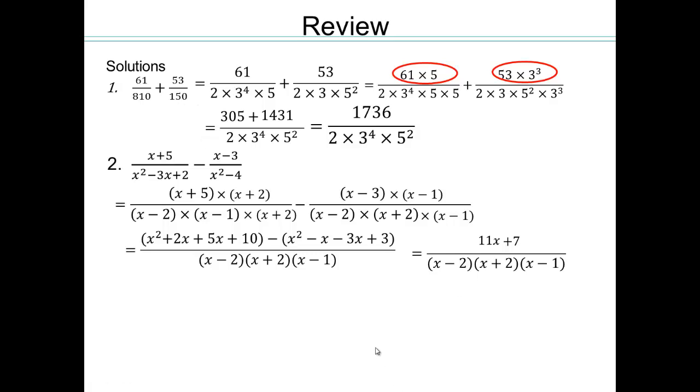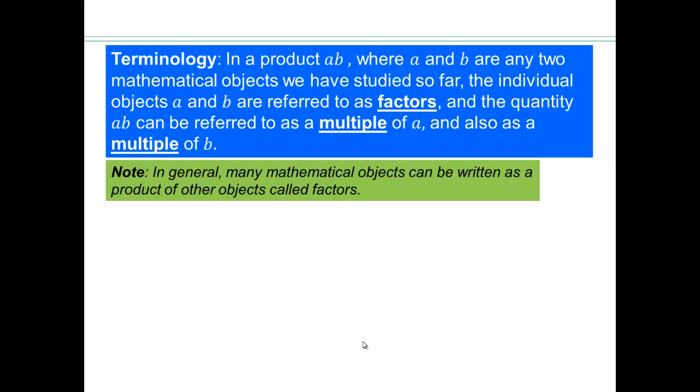So you can see how if we knew what the factors are of the denominators, it will make it a little easier. So now, let's concentrate on how we can go about getting those factors. Let's look at the terminology. In a product AB, where A and B are any two mathematical objects we've studied so far, the individual terms A and B are called factors. The quantity AB can be referred to as a multiple of A or a multiple of B.